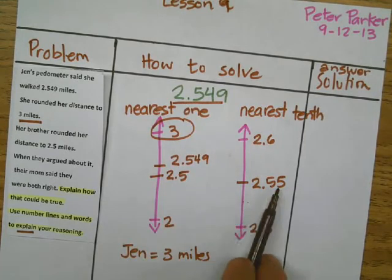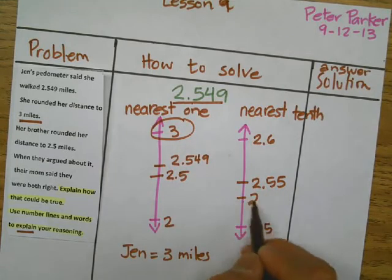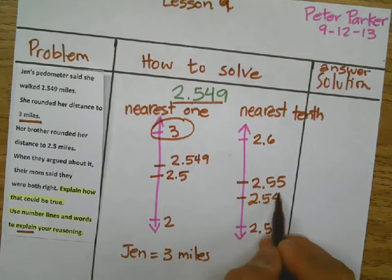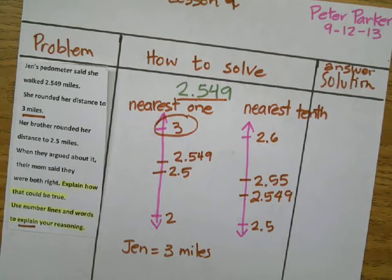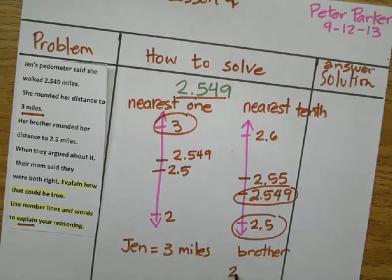So now, as you can see, the number that we are discussing is closer to 2.5. So now you know the reason why Jan and brother have a different rounding number, but the answer for both of them is correct, because he rounded to the nearest tenth, and she rounded to the nearest one.